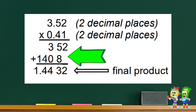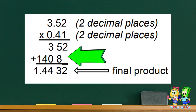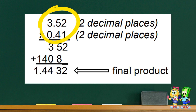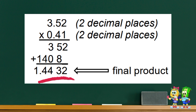Let us add the partial products. Bring down two. Five plus eight equals thirteen, carry one. Three plus one equals four. Bring down four. Bring down one. Notice that in the multiplicand there are two decimal places, and in the multiplier there are also two decimal places, so there are four decimal places all in all. Therefore, the final answer is one and four thousand four hundred thirty-two ten-thousandths.